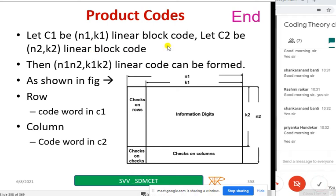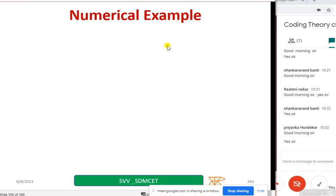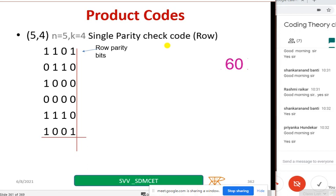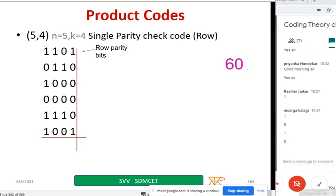Let us go to the simplest example. For a (5, 4) code, n equals 5 and k equals 4. I want one parity bit checked row-wise — one bit, either 0 or 1, such that it becomes even parity. I want you to write the one parity bit for each row to achieve even parity. Just complete it and I will show you the answer.